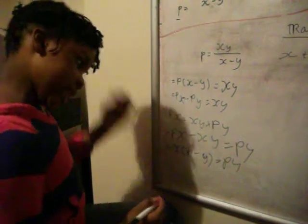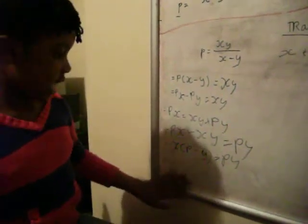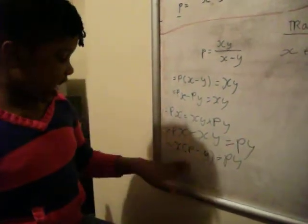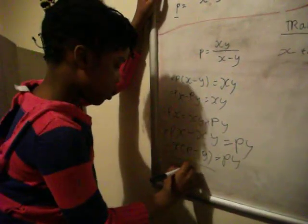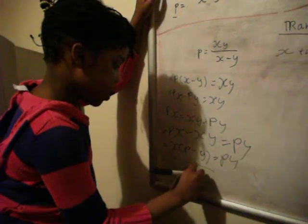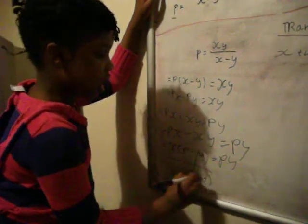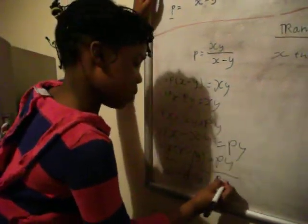You divide by p minus y from both sides to get x by itself. That'll become py over p minus y. That over p minus y.